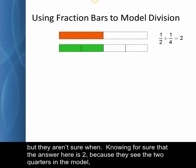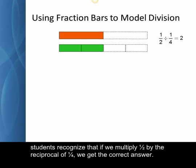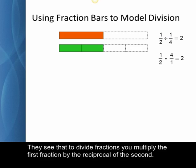Now many students remember something about using the reciprocal, but they aren't sure when. Knowing for sure that the answer here is two, because they see the two quarters in the model, students recognize that if we multiply one-half by the reciprocal of one-fourth, we get the correct answer. They see that to divide fractions, you multiply the first fraction by the reciprocal of the second.